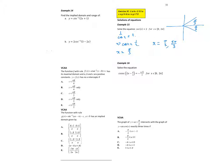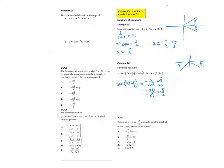Cosec is 1/sine, so flipping the left-hand side gives sin x = -3/(2√3). Rationalizing: -3√3/6 = -√3/2. Sine is negative in the third and fourth quadrants, and sin(π/3) = √3/2.